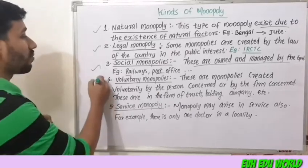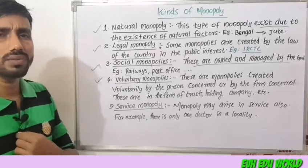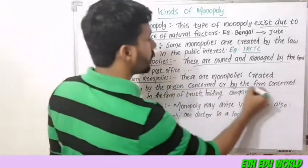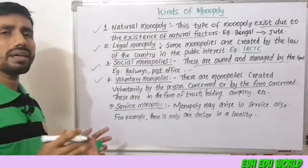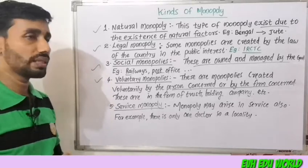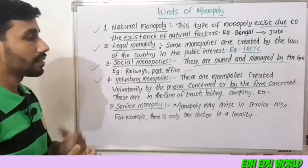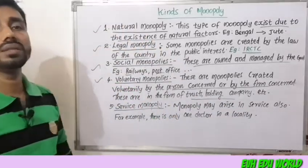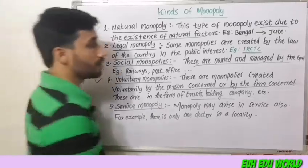The fourth kind is voluntary monopoly. These are monopolies created voluntarily by the person or firm concerned, such as companies that form voluntary monopolies. For example, ACC Cement has a monopoly in cement manufacturing.